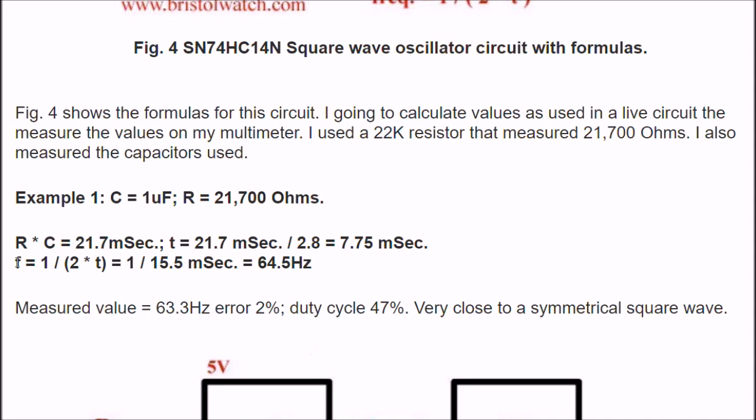Alright, to get the frequency, I'm going to take 1, that is I'm going to do the reciprocal, of 2 times T. 2 times T is 15.5 milliseconds. Take the reciprocal, and that calculates to a value of 64.5 hertz. When I measured it, the frequency output was 63.3 hertz, or a 2% error. Hey, not bad.